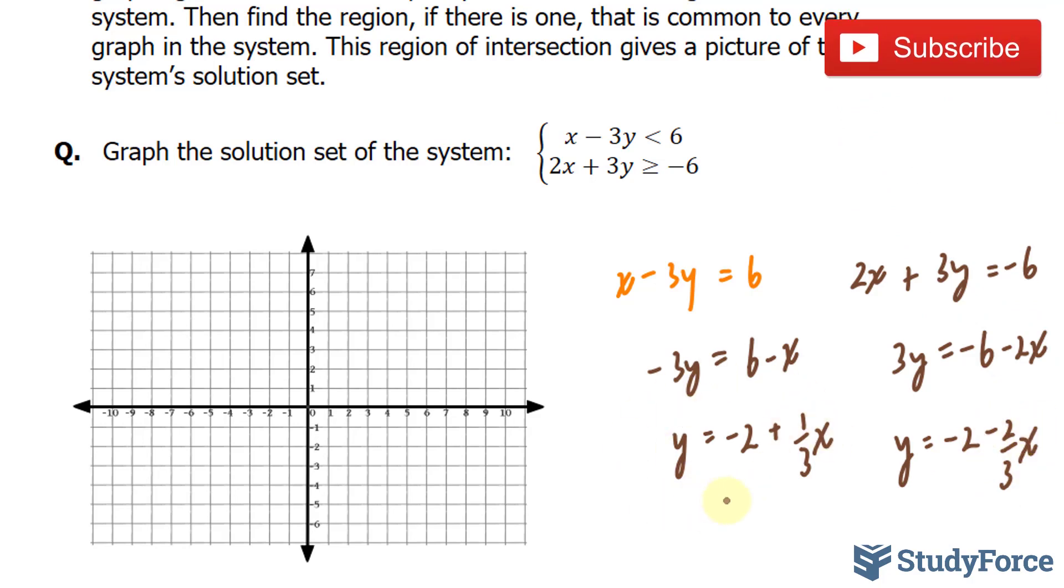I'll graph this in red, and I'll graph this in orange. Starting with this, we have a y-intercept of negative 2 and a slope of 1 over 3, which means that we go up 1 over 3 to the right. For this one, we have negative 2 as the y-intercept. We go down 2 and over 3 to the right. Let's connect these points with straight lines.